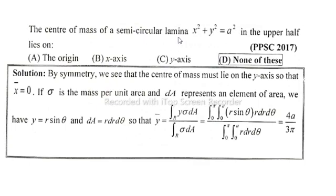The semicircular lamina x² + y² = a² in the upper half lies on. Solution: By symmetry, we see that the center of mass must lie on the y-axis so that x̄ = 0.